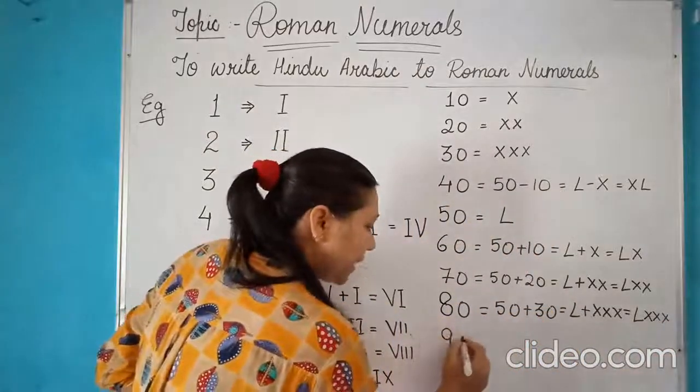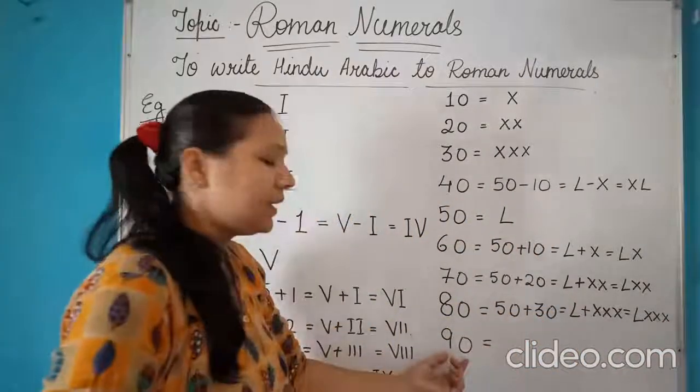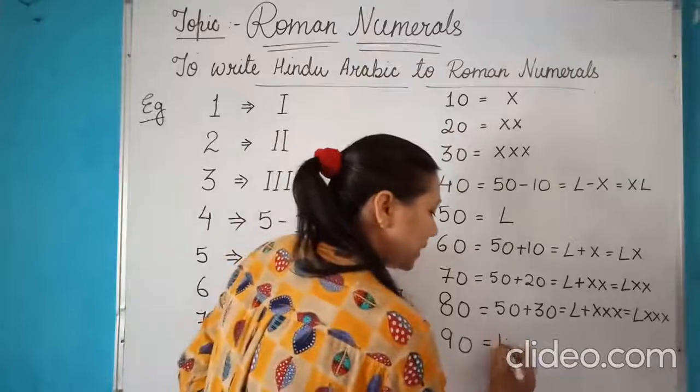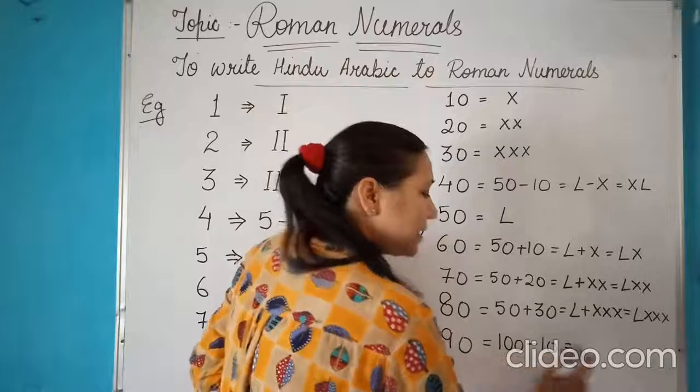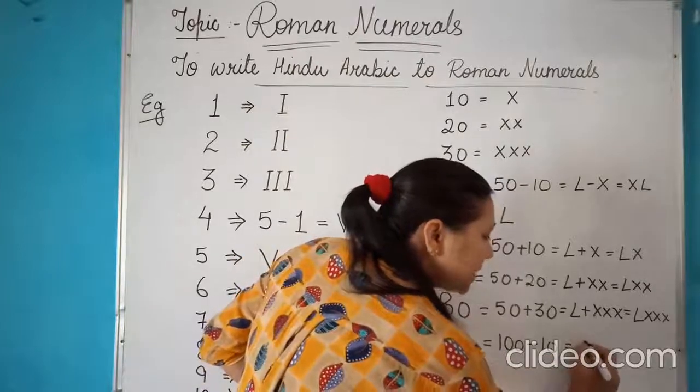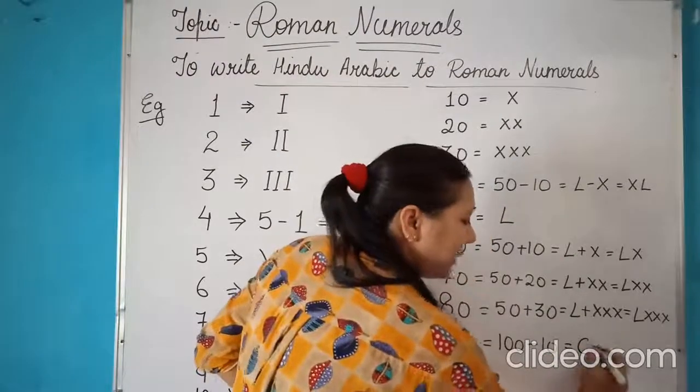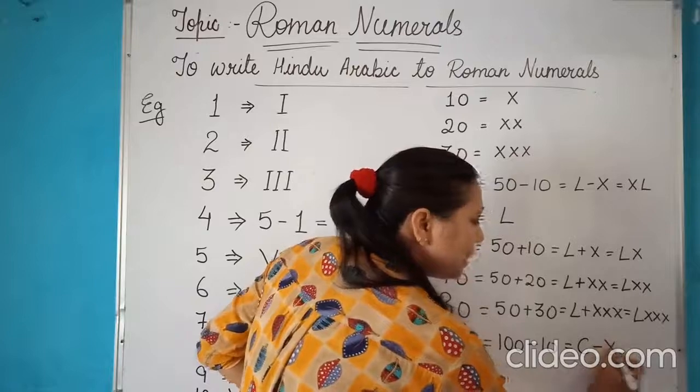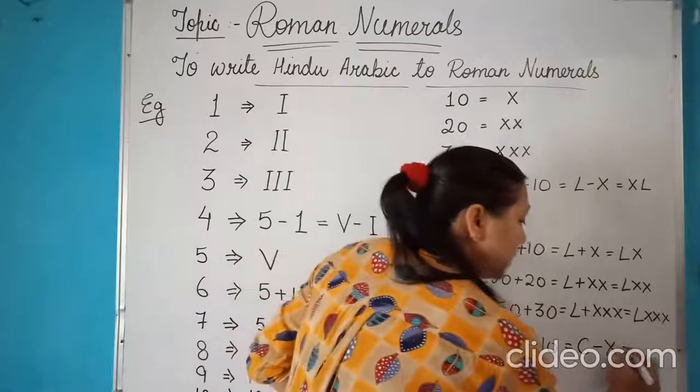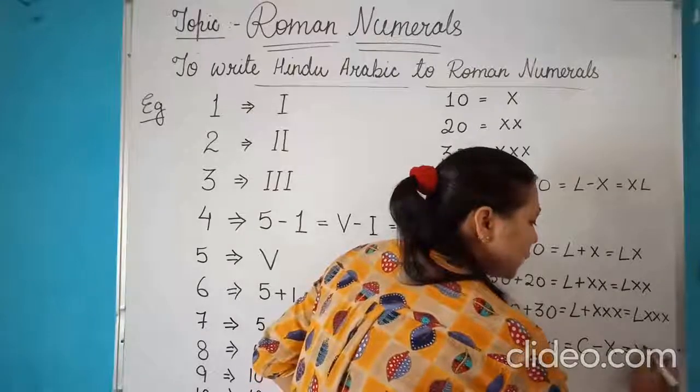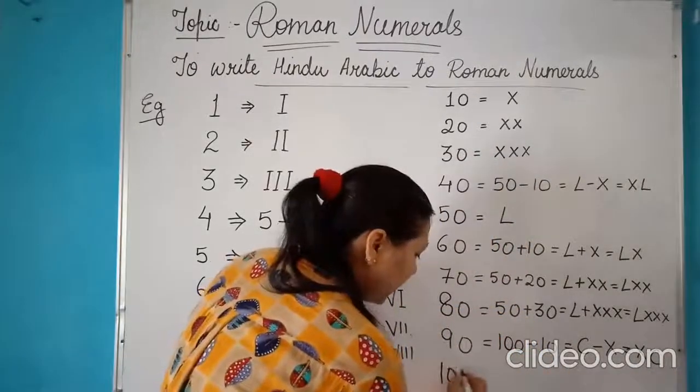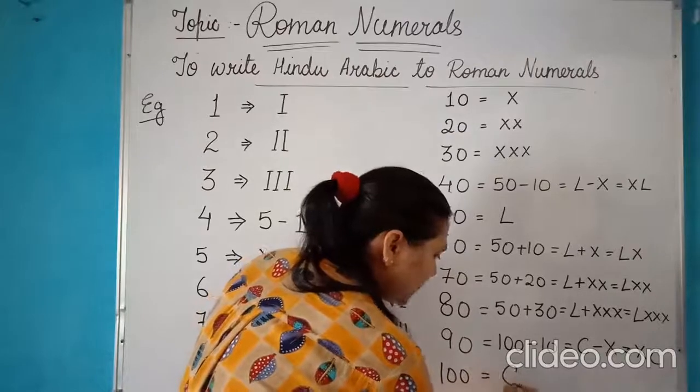Now coming to the part of 90. If you have to represent 90, once again, subtraction rule is there. So we will write it as 100 minus 10. 100 minus 10 means, what is the symbol of 100? It is C minus, the symbol for 10 is X. So since it is subtraction rule, again, it will become the prefix. So it is XC and the value for 100 is C.